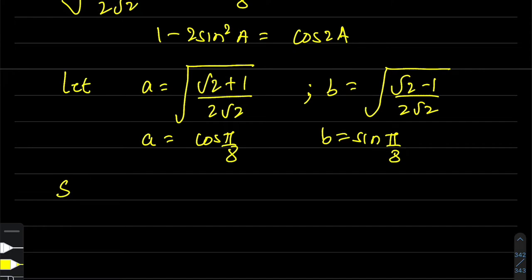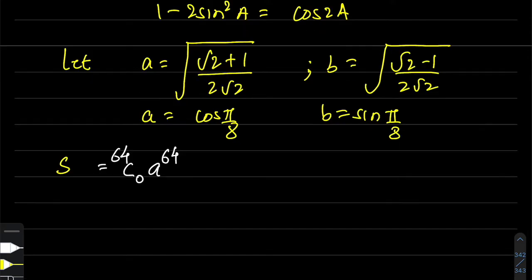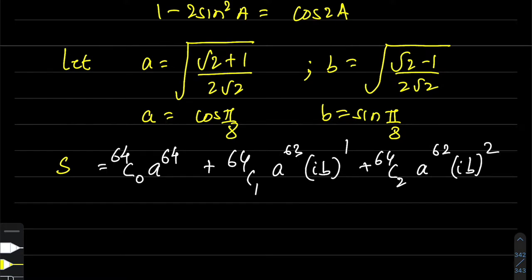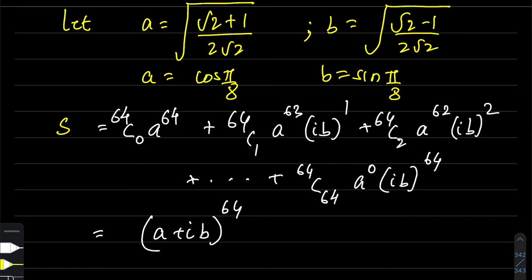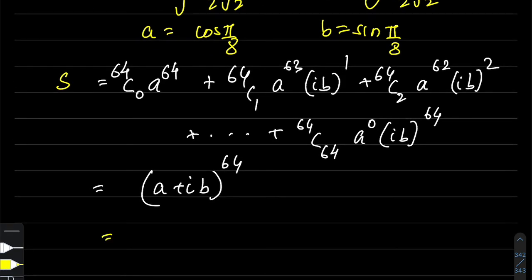The entire sum is ⁶⁴C₀·a^64 + ⁶⁴C₁·(ib)·a^63 + ⁶⁴C₂·(ib)²·a^62 + ... + ⁶⁴C₆₄·(ib)^64. This sum is clearly the binomial expansion of (a + ib)^64. If anybody knows the basics of binomial expansion, they would realize this given series stands for the binomial expansion of this particular term.